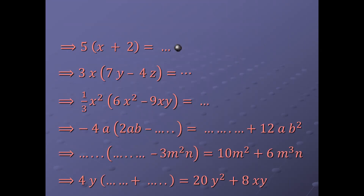First equation: 5 times bracket x plus 2. First, multiply the monomial with each term of the expression. So 5 times x equals 5x, and 5 times 2 equals 10. So the result will be 5x plus 10.